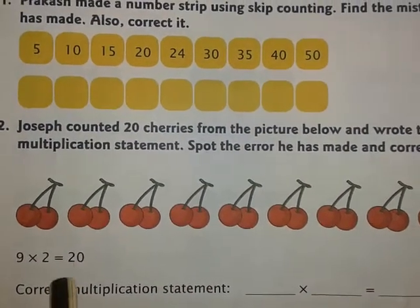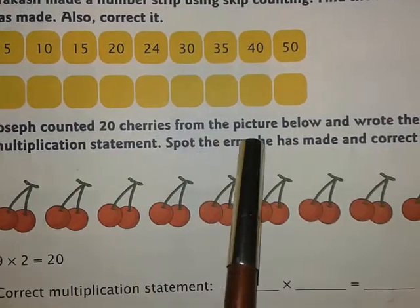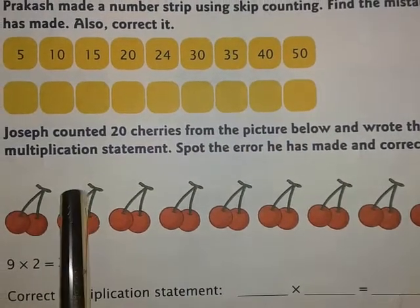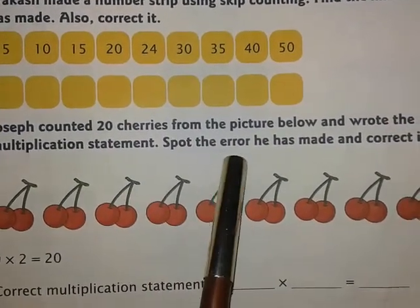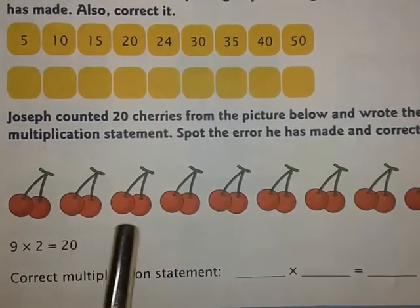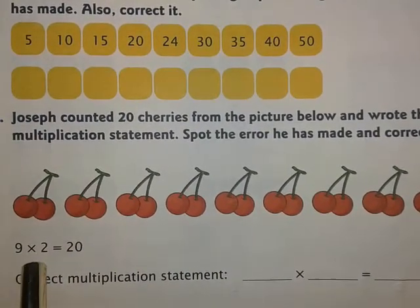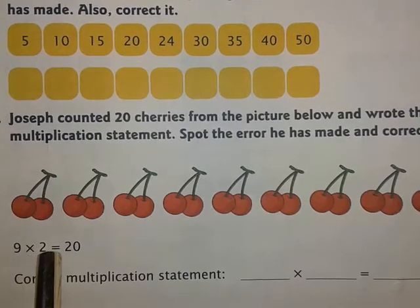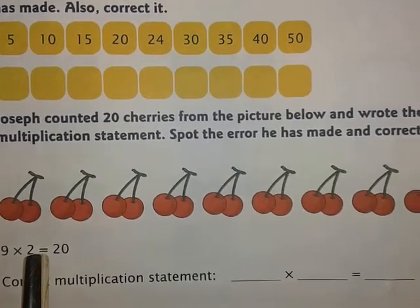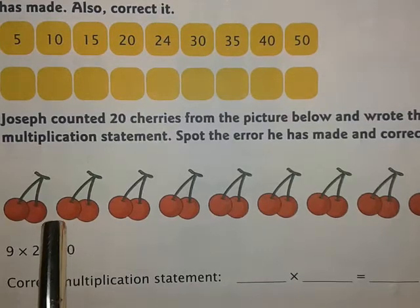The next question is: Joseph counted 20 cherries from the picture below and wrote the multiplication statement. Spot the error he has made. Now see how many cherries are there. He wrote it as 9 into 2 equals 20. So let us count how many groups there are — we can see there are 2 in each group.